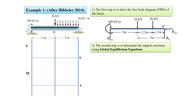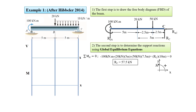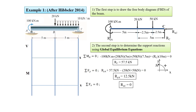The second step is to determine support reactions using global equilibrium equations. Remember to draw your sign convention to avoid calculation mistakes. Sum of all moments at point A must be zero. Sum of all forces in the Y direction must be equal to zero, giving us the reaction force RYA equals 12.5 kilonewtons. This value is the shear force at point A: VA equals 12.5 kilonewtons. Sum of all forces in the X direction must also be zero, therefore RXC equals zero.